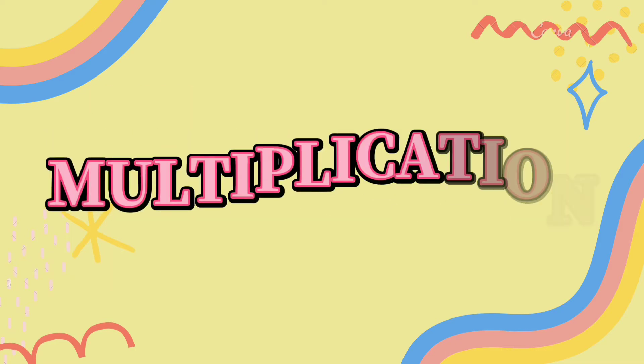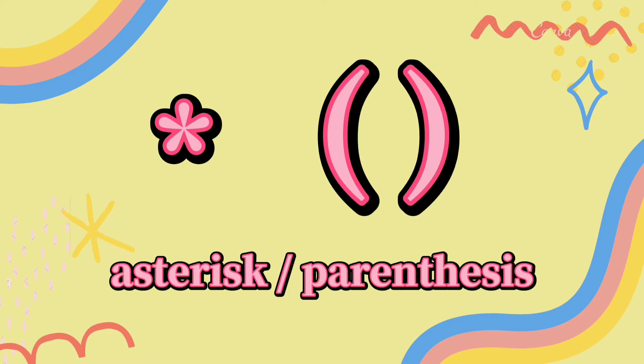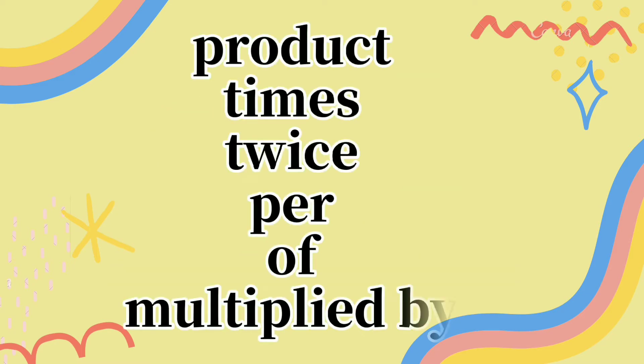Let's proceed to multiplication. This is the symbol for multiplication. Its keywords are: product, times, twice, per, multiplied by. Those are its keywords.